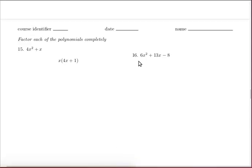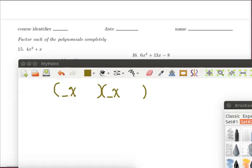In this next problem we're interested in factoring 6x squared plus 13x minus 8. We look for a common factor, there is none. We notice that this is a trinomial and we know that sometimes two binomials will multiply together to give us a trinomial.